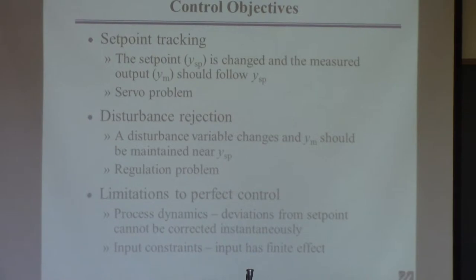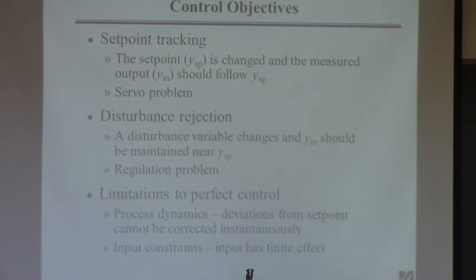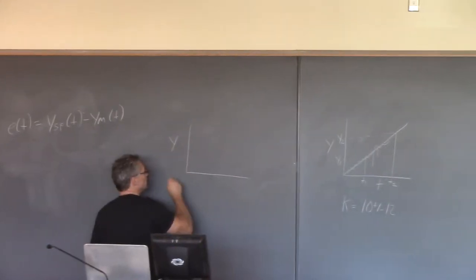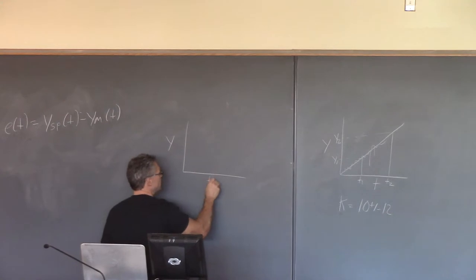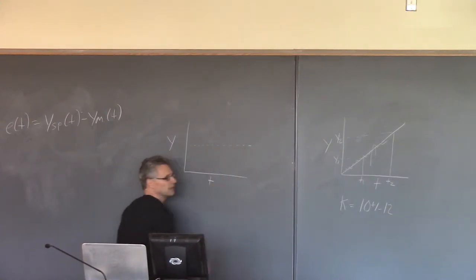You start up the plant, and once you start up the plant, your goal is to operate the plant at some predetermined steady state for as long as possible, or until you're going to switch to some different product. Here's the output, here's time, here's the set point — constant, not changing.